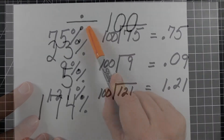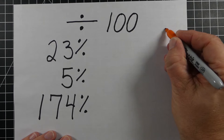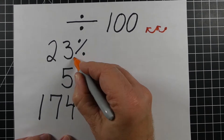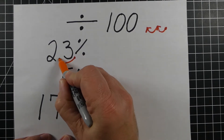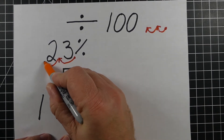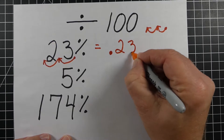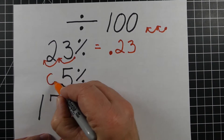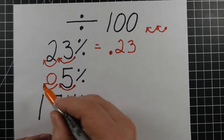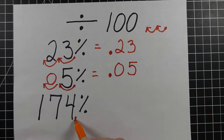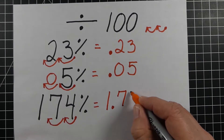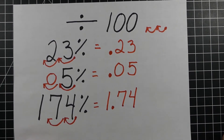Any time you divide by 100, you'll notice a pattern: the decimal moves two places to the left. The decimal is always at the end of a whole number. So for 23%, the decimal moves two times to give 0.23. For 5%, you add a zero because there's only one digit, so it's 0.05. And for 174%, moving it two times gives 1.74. Understanding this will save you a lot of time switching decimals to percents.